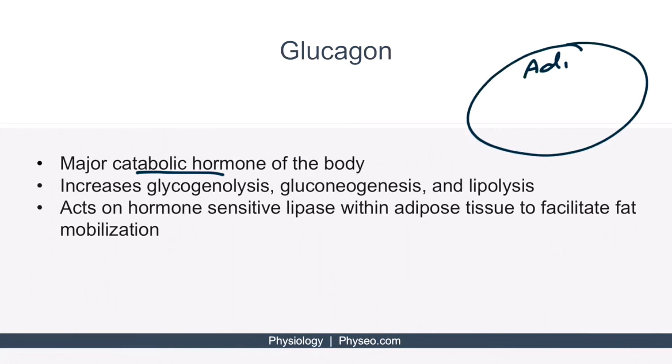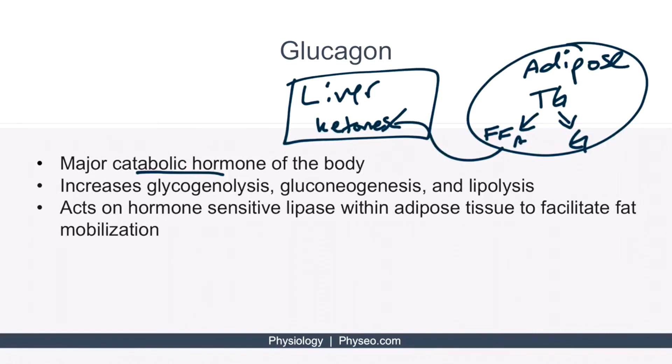So this is adipose tissue, and this is the liver. Glucagon upregulates the enzyme hormone-sensitive lipase, which is present in adipose tissue, which causes triglycerides to break down into free fatty acids and glycerol, which can then be released into the blood, travel to the liver, and be converted into ketones. Ketones can then be converted to acetyl-CoA and metabolized for ATP in the brain when glucose gets low.